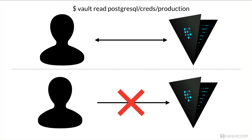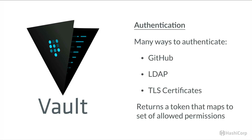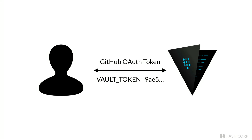To know who should have access to what, Vault has authentication. The first step to interacting with Vault is to prove who you are — via GitHub, LDAP, or TLS certificates. GitHub and LDAP are great for human operators; TLS certificates work well for machines interacting with Vault. Once you authenticate, you're returned a token which maps to a set of permissions. For example, a user sends their GitHub OAuth token to Vault, and Vault returns a Vault token — just a random UUID that maps to your permissions for subsequent requests, without exposing what that token gives access to.